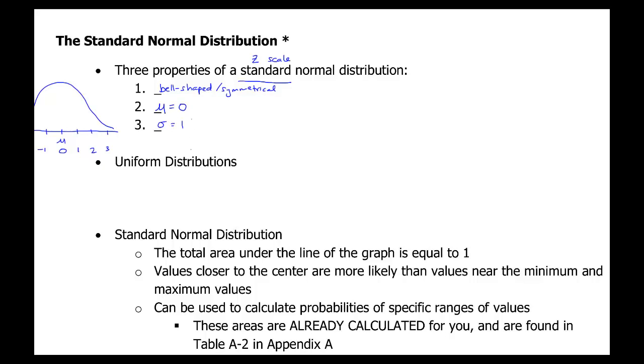Again, the z-scale is on the x-axis. Remember the middle values close to the mean are more likely, and extreme values on the tails are less likely. What we're going to add to this now is, we're going to actually be calculating areas, which are going to represent probabilities. The total area underneath this curve equals 1. Maybe we could add that.